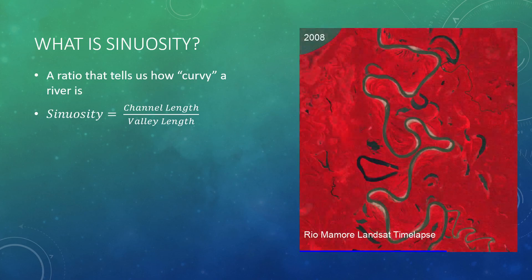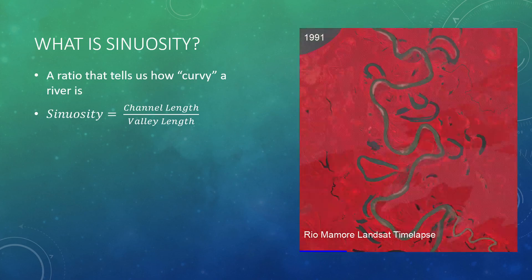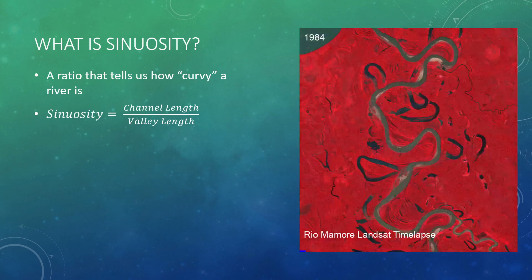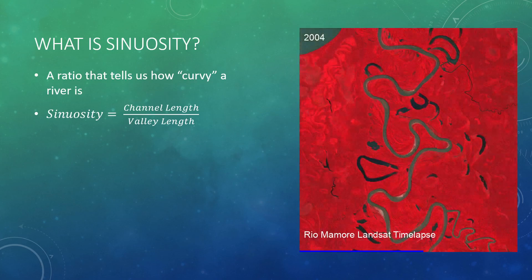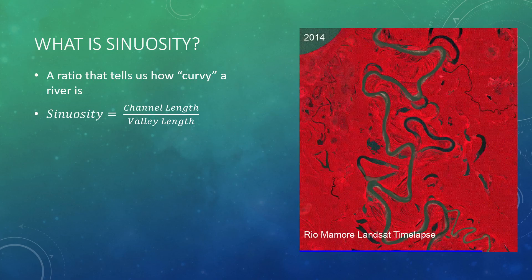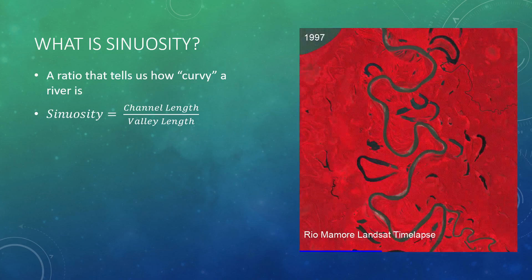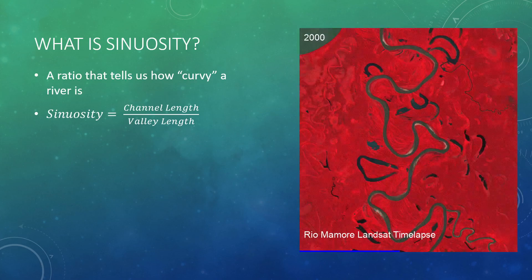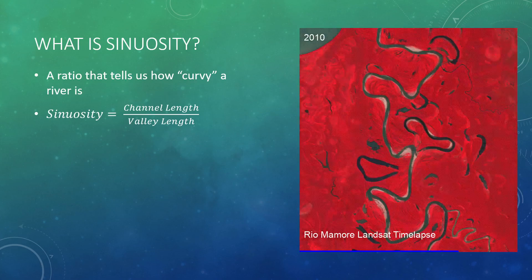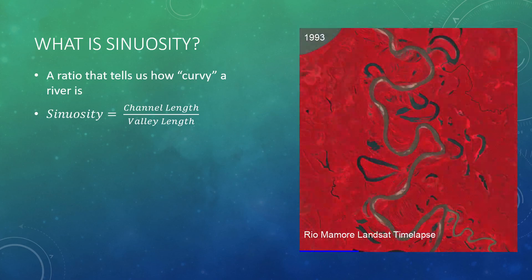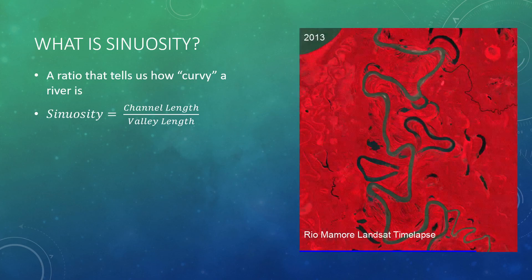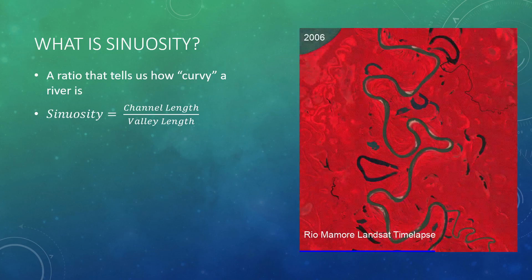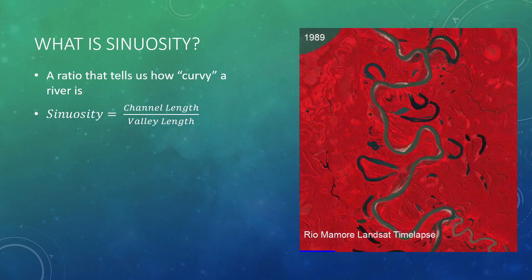In a basic sense, sinuosity describes how curvy a river is. It's a ratio that's simply defined as the length along the channel against the length of the valley. However, as we can see with the gif on the right, rivers don't like to stay put. They change rapidly, and the first thing we should consider is that sinuosity as a measurement is really only applicable to a snapshot in time relative to the state of the river that the valley and channel lengths were measured from.